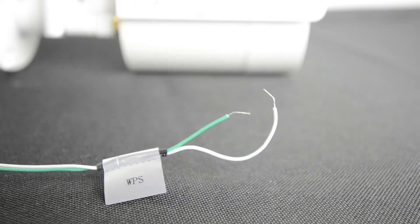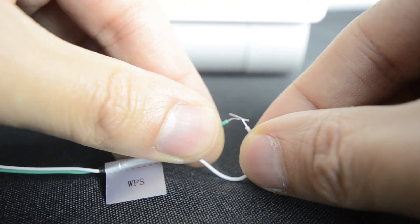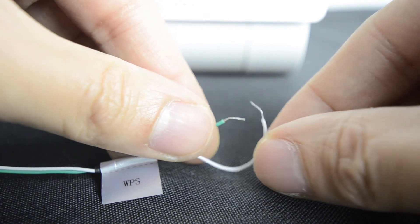To utilize WPS, press the WPS button on the router and touch the ends of the green and white wires on the camera together for one to two seconds. Generally, the device will connect to the corresponding router within one minute.